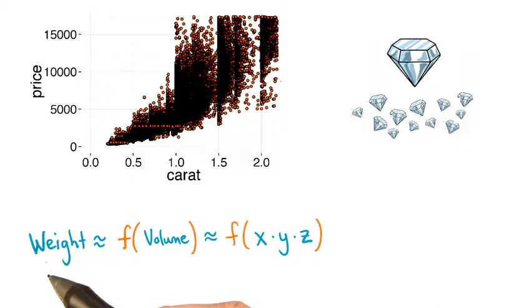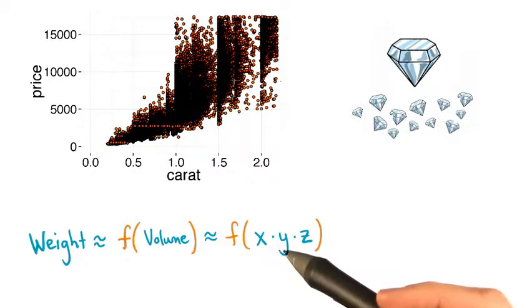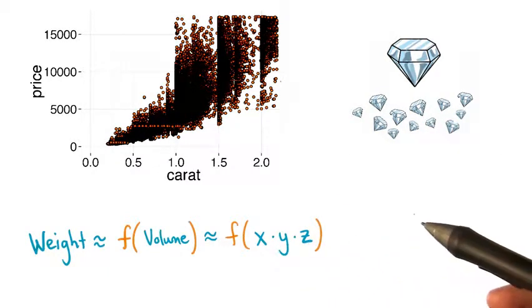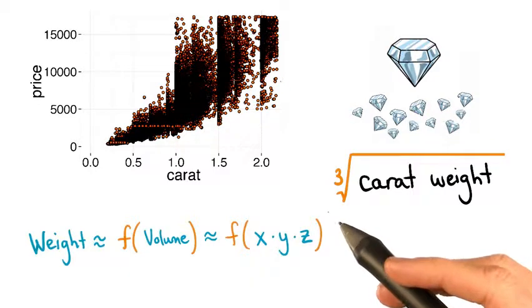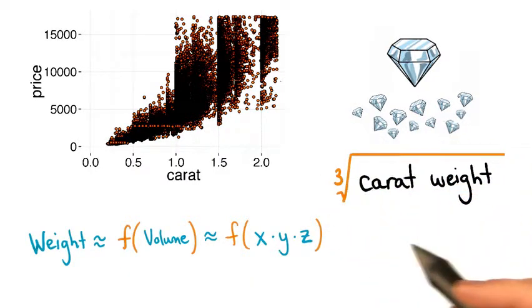Of course, this is related to the fact that the weight of a diamond is a function of volume, and volume is a function of the length times the width times the height of a diamond, and this suggests that we might be especially interested in the cube root of carat weight.